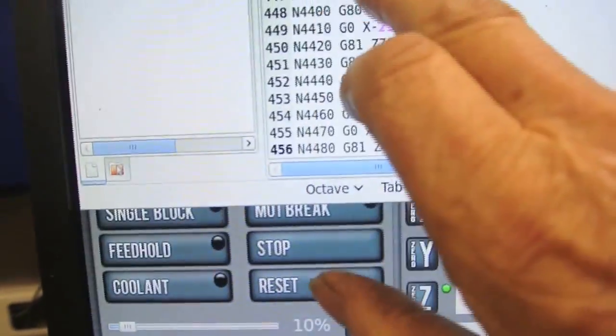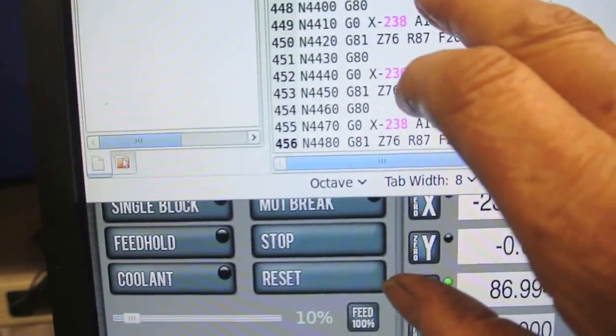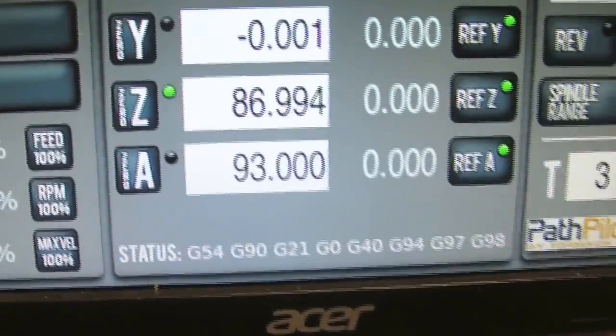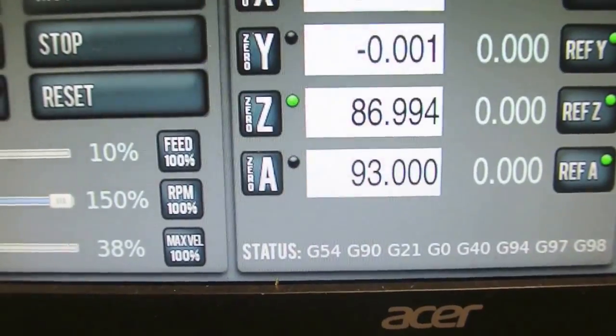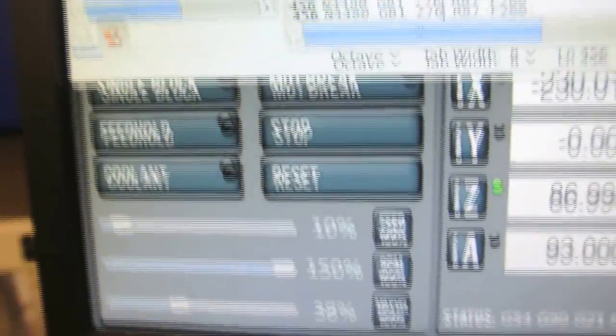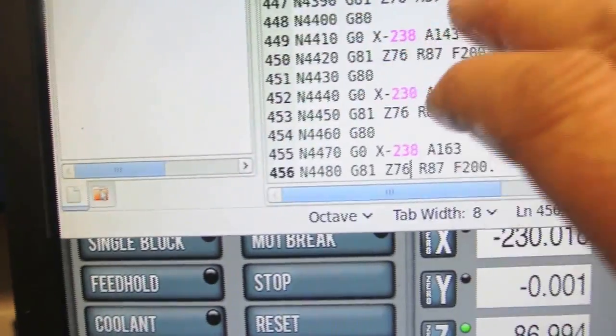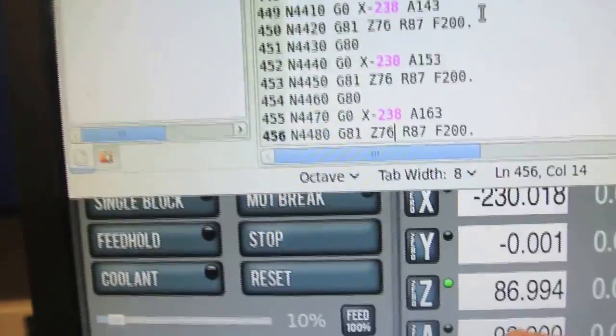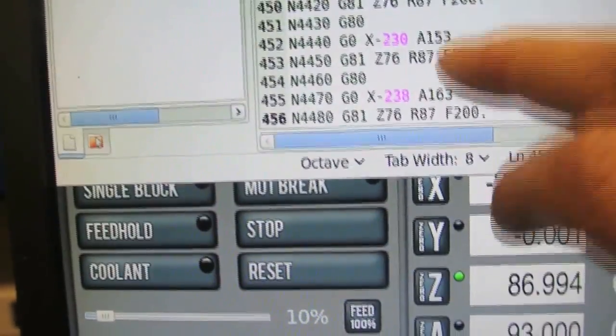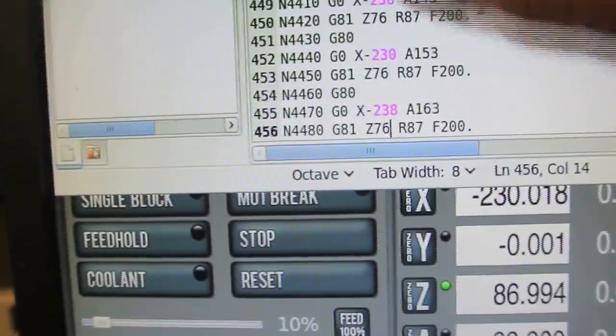It's telling it to go to X230, A133. That's the angle it's at. At the moment it's at 93, that's plus 93, that's minus 133. We're at 93 here, so 93 is just off the screen at the top here.